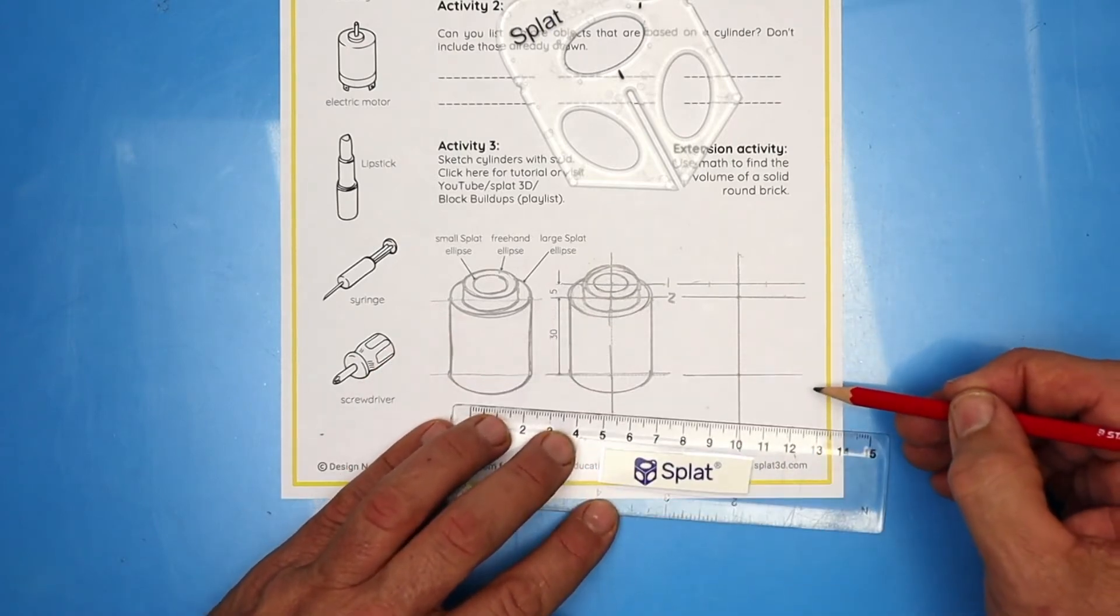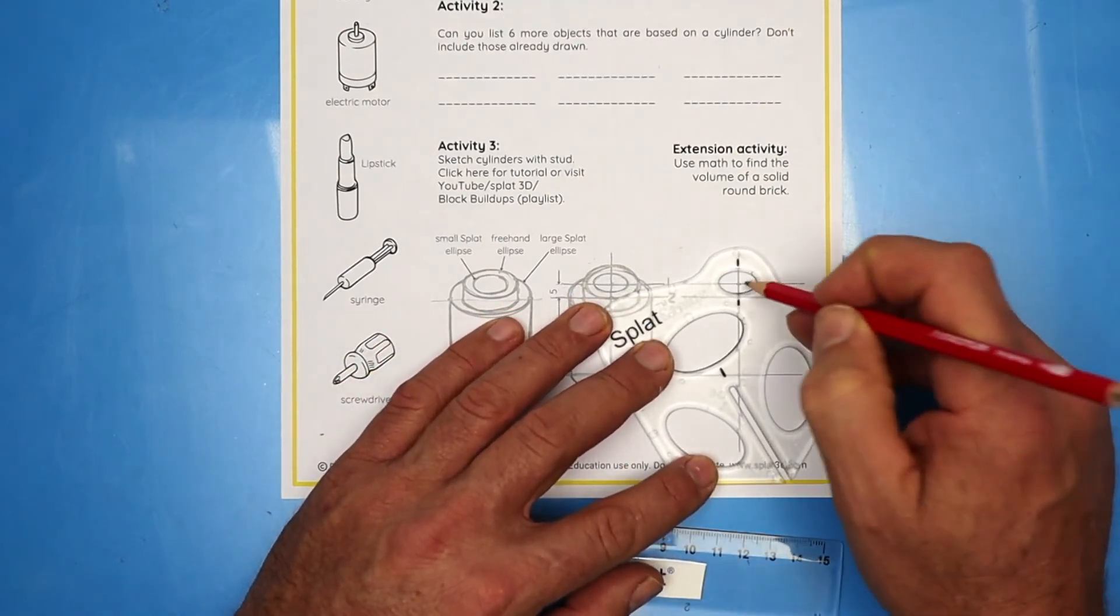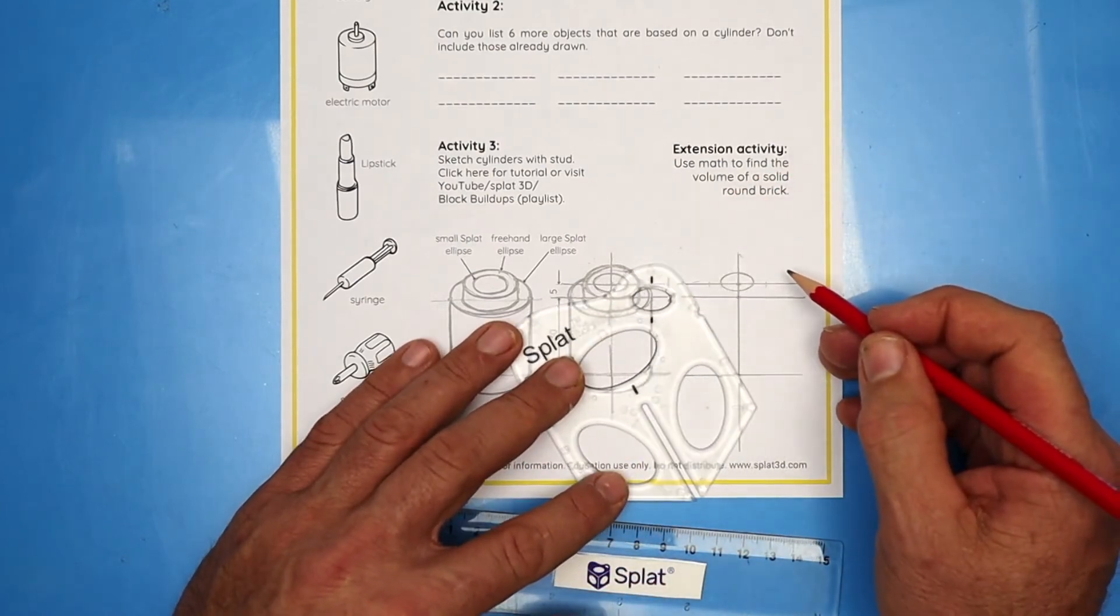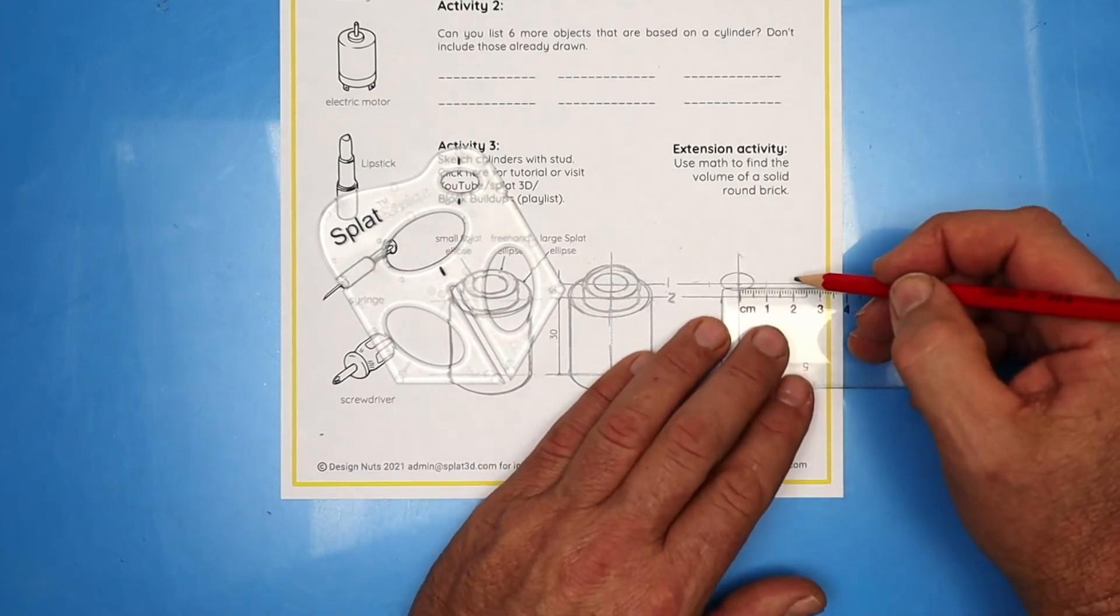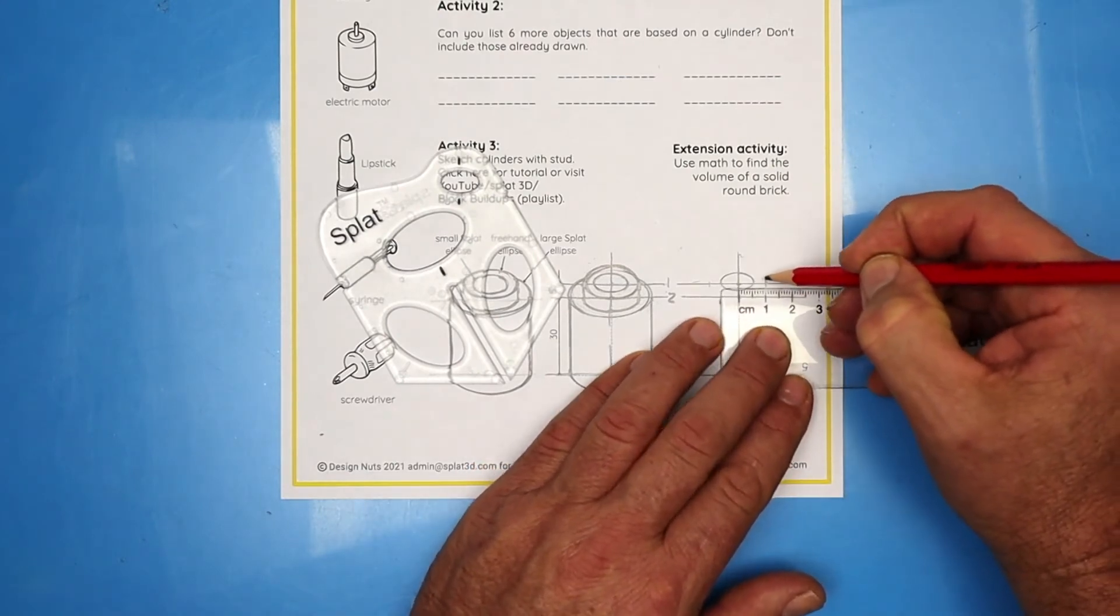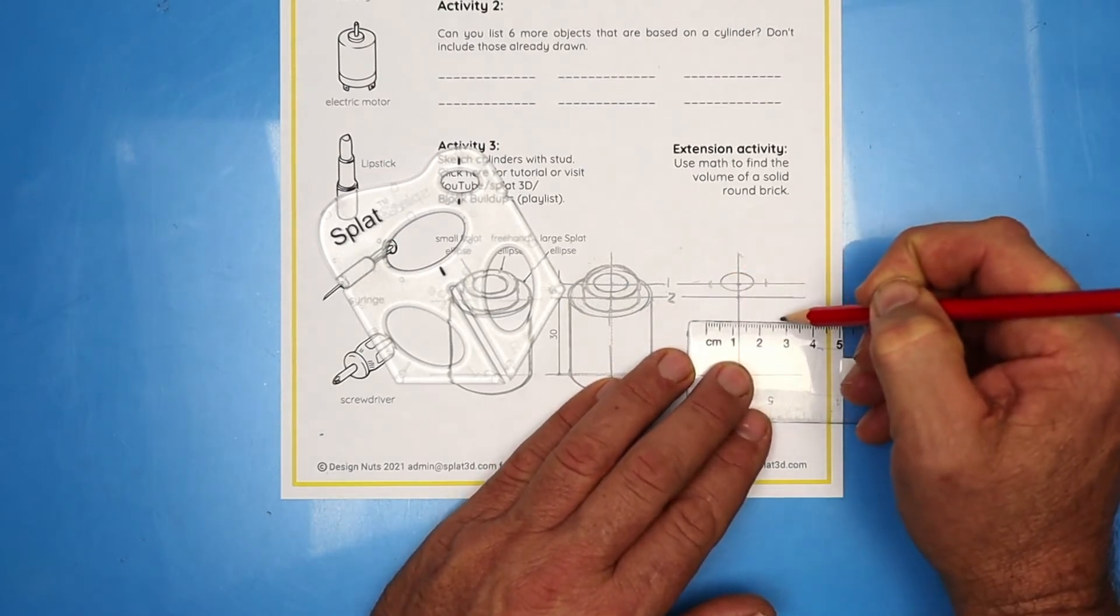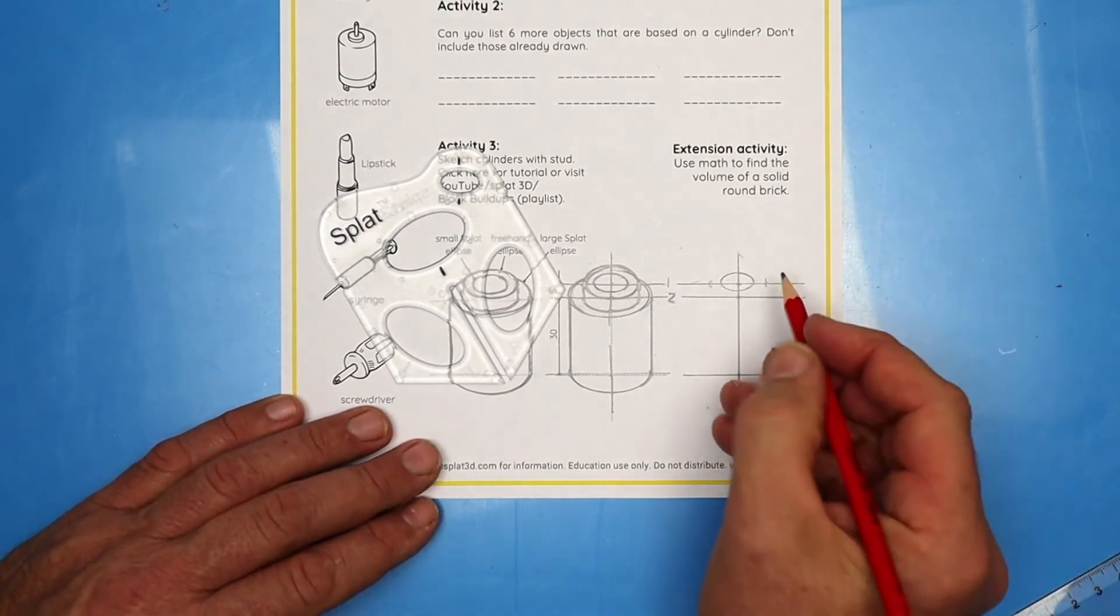Remember we used the small ellipse centered on that first axis. Draw the whole ellipse. Then we used a slightly larger ellipse. We're going to measure 10mm to the right and 10mm to the left. That's how wide we want our next ellipse.